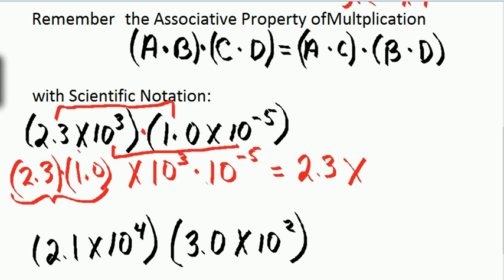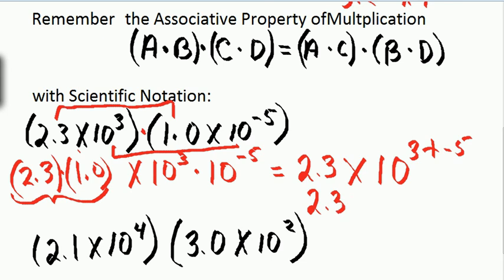I apply the property of powers: I have the same like base, so I add my exponents — 3 plus negative 5 — giving 2.3 times 10 to the negative 2.